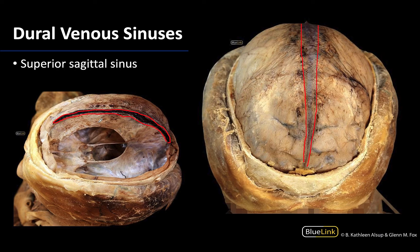It's running along the length here — it's easier to see in this particular dissection because it has been opened, so a portion of the dura has been removed in order to see the blood running within that region. It will flow towards the confluence of sinuses, which is associated with the posterior portion of the skull close to the occipital bone.